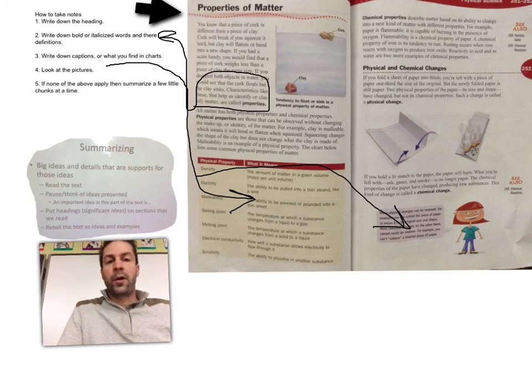So by following these five steps, I can be sure to get the most important information that the non-fictional text is giving me, without copying it word for word or writing too much.